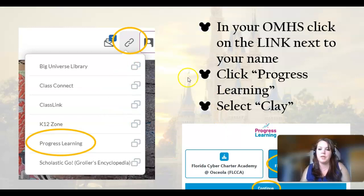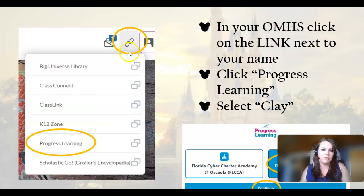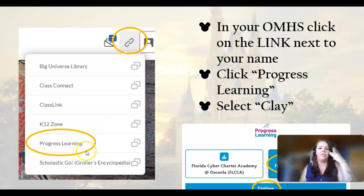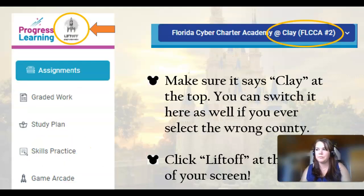So in Progress Learning, just to review how to get there, you're going to go into that OMHS and click the link button and click on Progress Learning. Then you're going to select Clay and continue. Once you're in here, if you accidentally didn't select Clay, you can just change it up at the top.